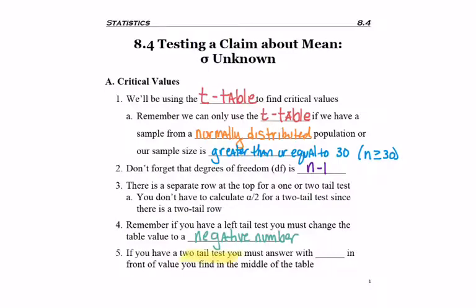And when working with a two-tail test, even though you'll be using the row at the top that says two tails, the table value needs plus or minus in front of it.